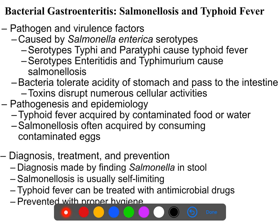Typhoid fever is most frequently transmitted fecal-orally through contaminated food or water. Salmonellosis is often acquired by consuming undercooked poultry. Pretty much any bird you might eat could have Salmonella.